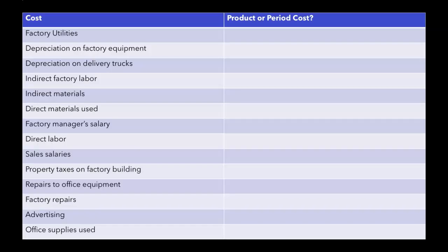We have a long list of different costs that a company might have, and we need to figure out: is it a product cost or a period cost? The first one is factory utilities. Factory utilities are in the factory, so the first question to ask yourself is: is it in the factory? If it's in the factory, it's going to be a product cost — specifically manufacturing overhead. Next: depreciation on factory equipment. The equipment is in the factory, so once again it's a product cost and manufacturing overhead.